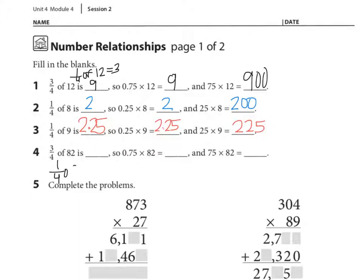So 1 fourth of 82 equals 20 and a half. Now I want 3 fourths. So I need to take this 20 and a half and find 3 groups of it. So 20, 40, 60 plus 3 halves. 3 halves is 1 and a half. So 60 plus 1 and a half equals 61 and a half. So 75 hundredths times 82 equals 61 and a half. 75 times 82 is going to be 100 times greater, so that's 6,150.